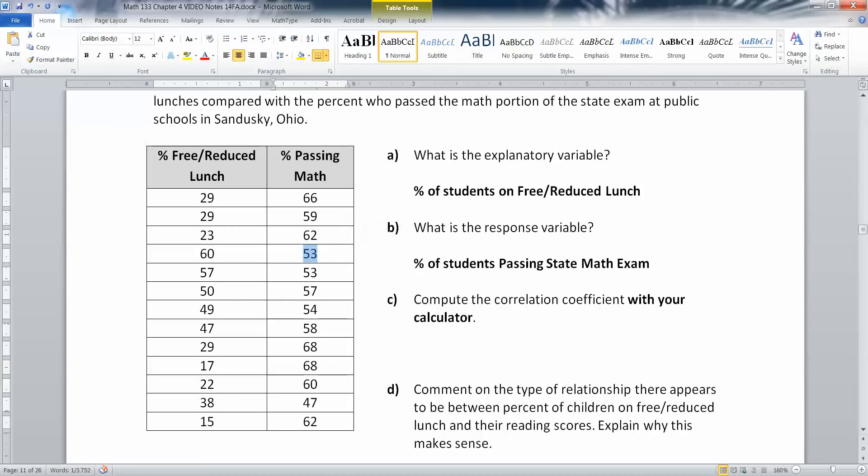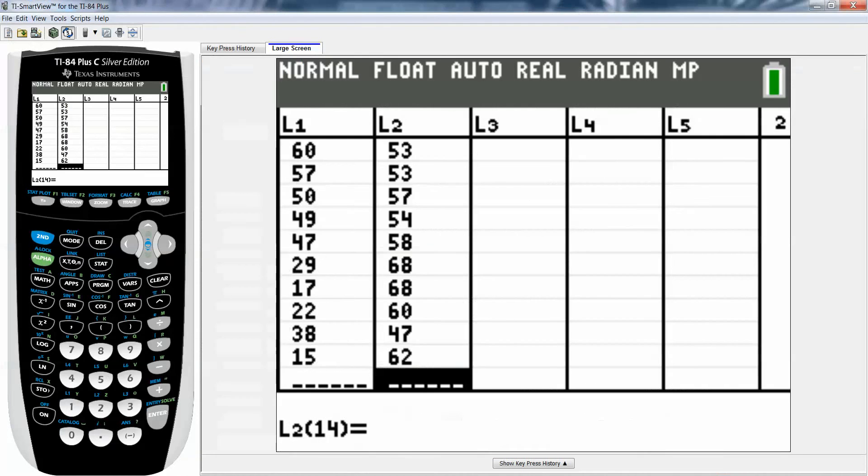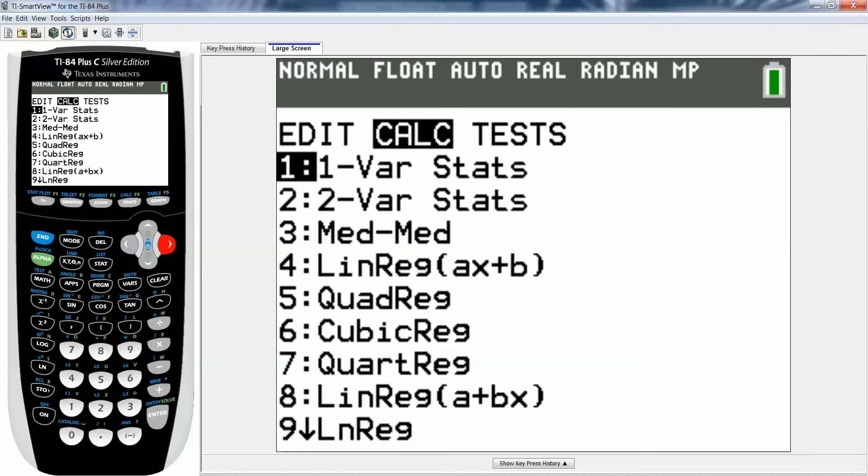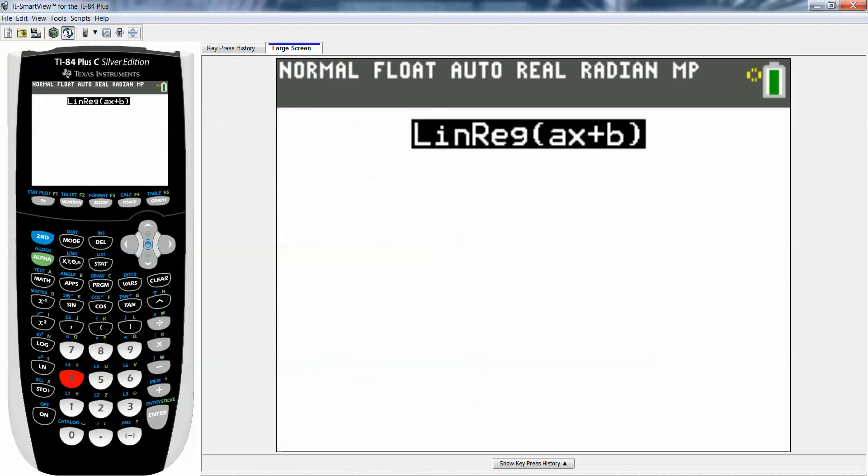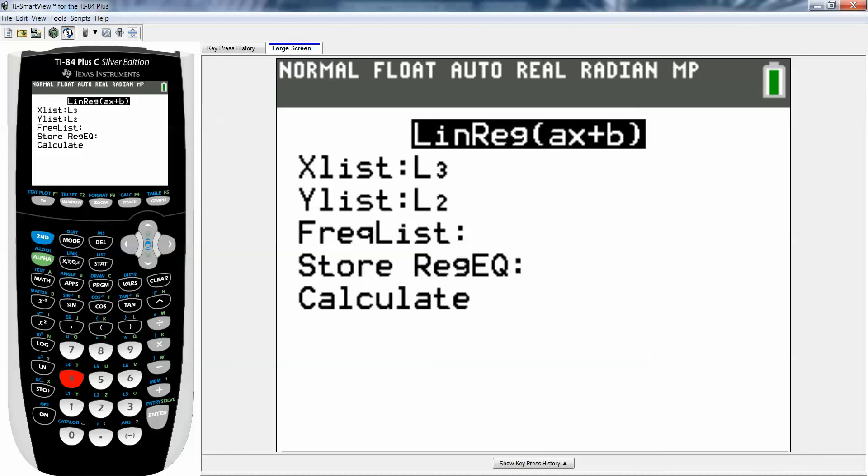We're going to compute the correlation coefficient with our calculator because nobody wants to do this by hand. Once you have your data entered, you press stat, move to the right to calculate, and you want number 4 which is linear regression. Now it wants to know what was my X and what was my Y. X is your explanatory and that was L1 for us, so second one for L1. The Y list was L2, so second two.